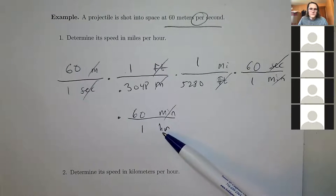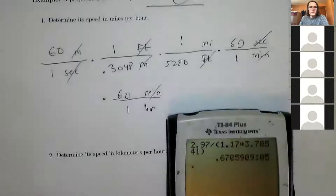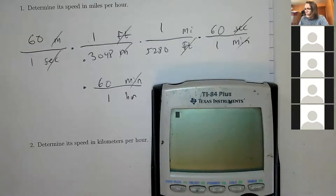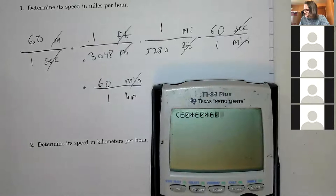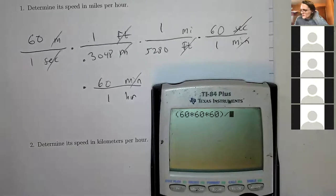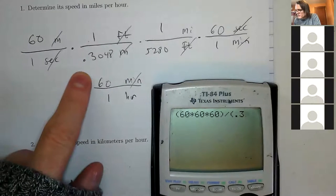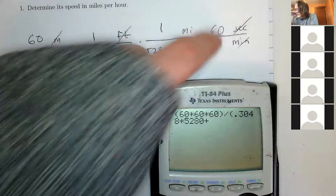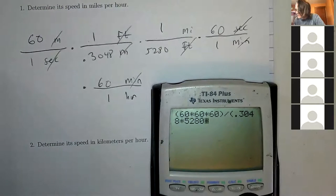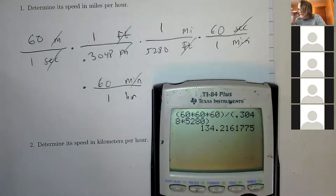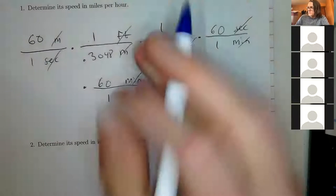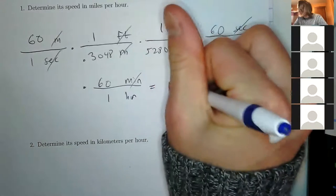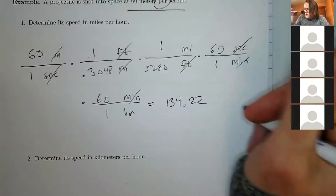The seconds cancel, the minutes cancel, and you're left with miles per hour. Compute: numerator is 60 × 1 × 1 × 60 × 60; denominator is 0.3048 × 5280 × 1 × 1. Calculate using a calculator: approximately 134.22 miles per hour.